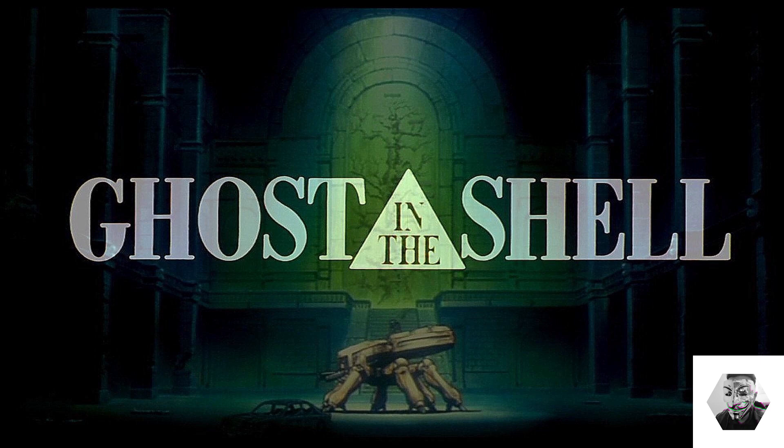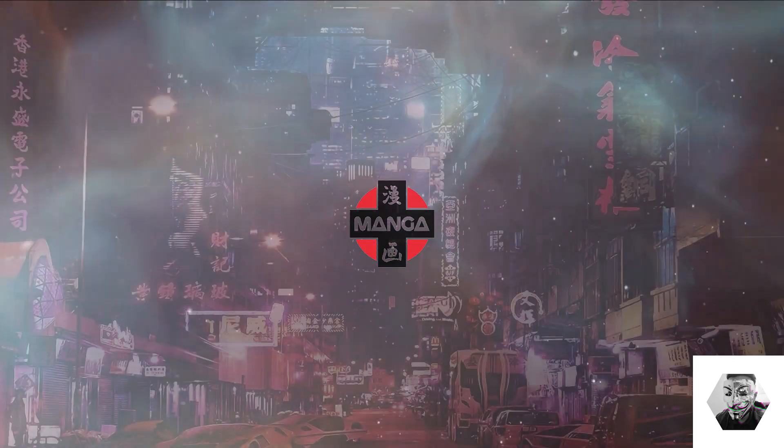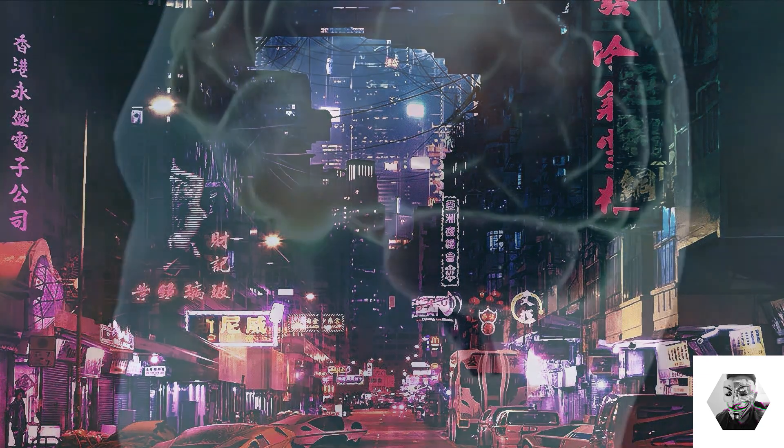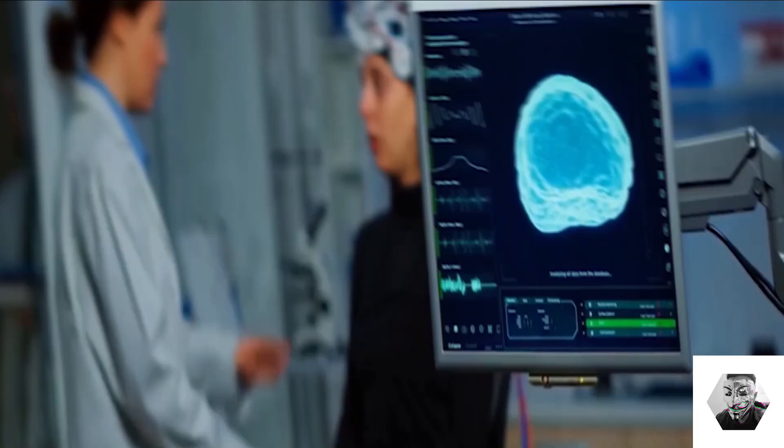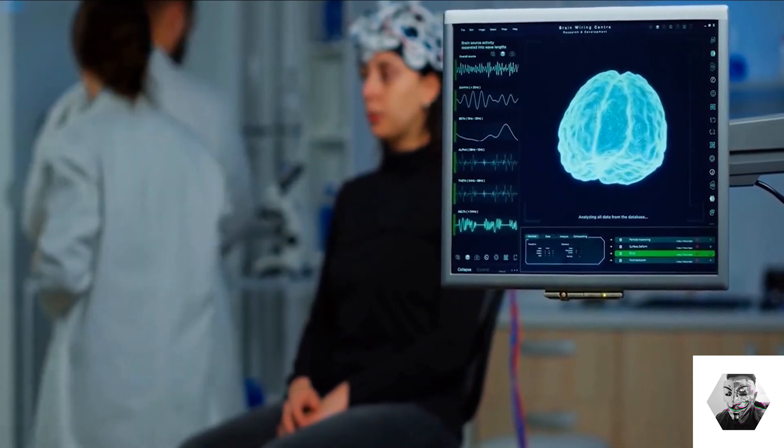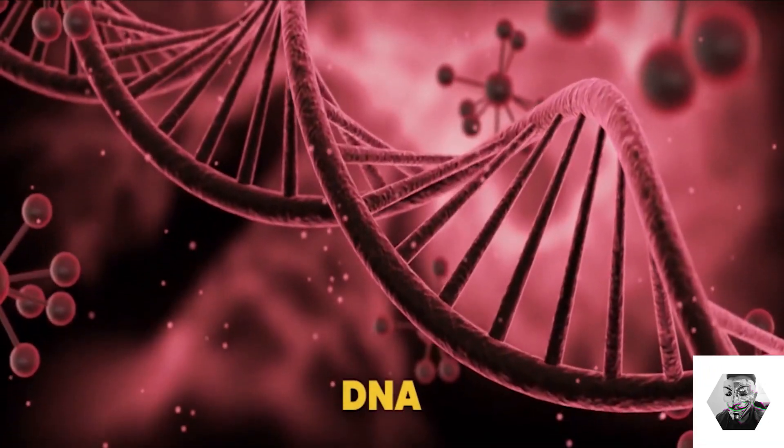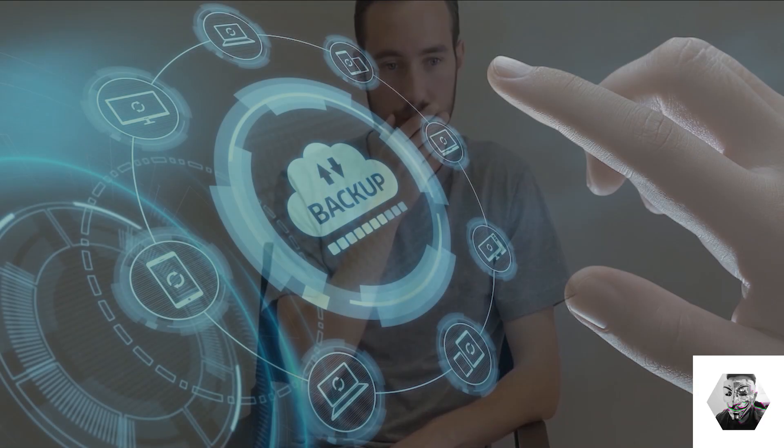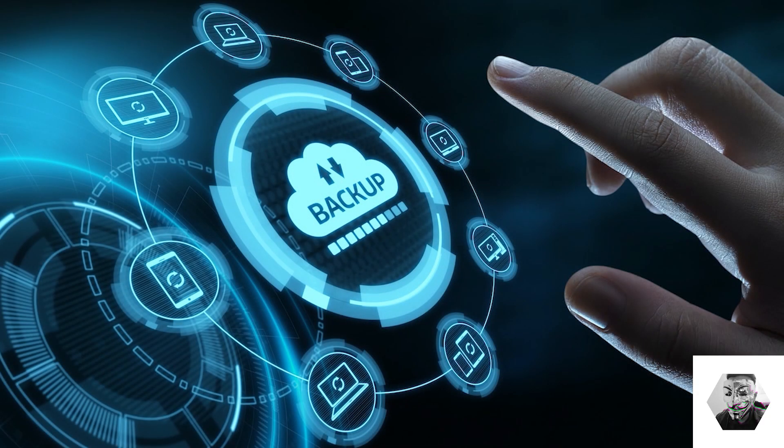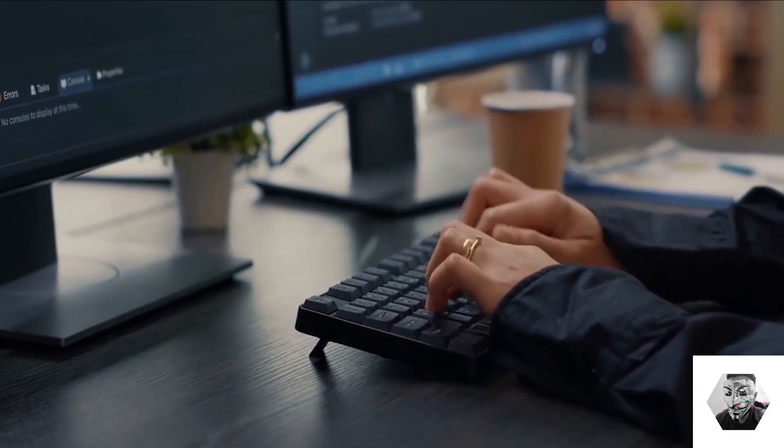Next, we have Ghost in the Shell, a hands-down manga classic, and it's set in a kind of a futuristic Japan where people's consciousness can be transferred into robotic bodies, and the question of what happens to their humanity during that transference comes into light. Now, the main antagonist in this series was the puppet master who introduced the key notion of DNA being nothing more than a program designed to preserve itself and that life has become more complex in the overwhelming sea of information, which is quite true in this day and age.